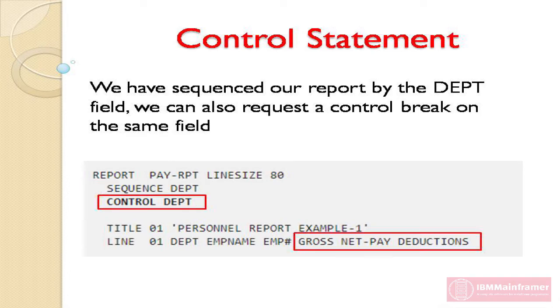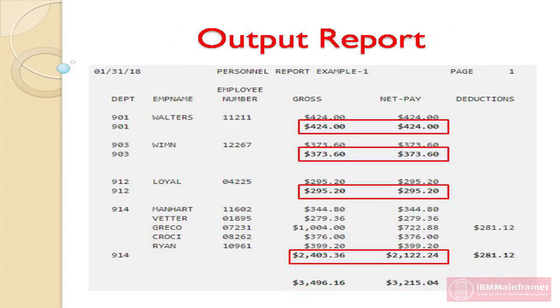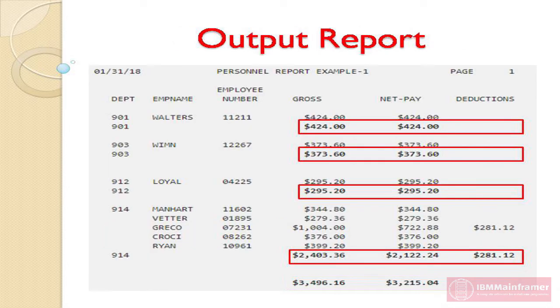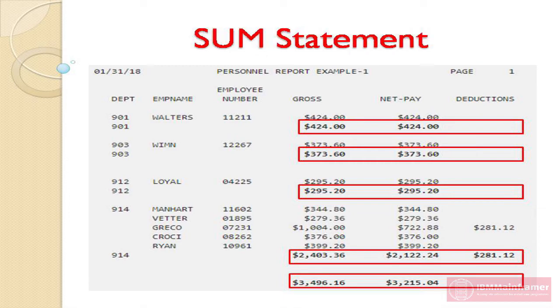With that additional statement, gross, net pay, and deductions totals are shown for each department, with grand totals at the end of the report. The next report definition statement is the Sum statement.